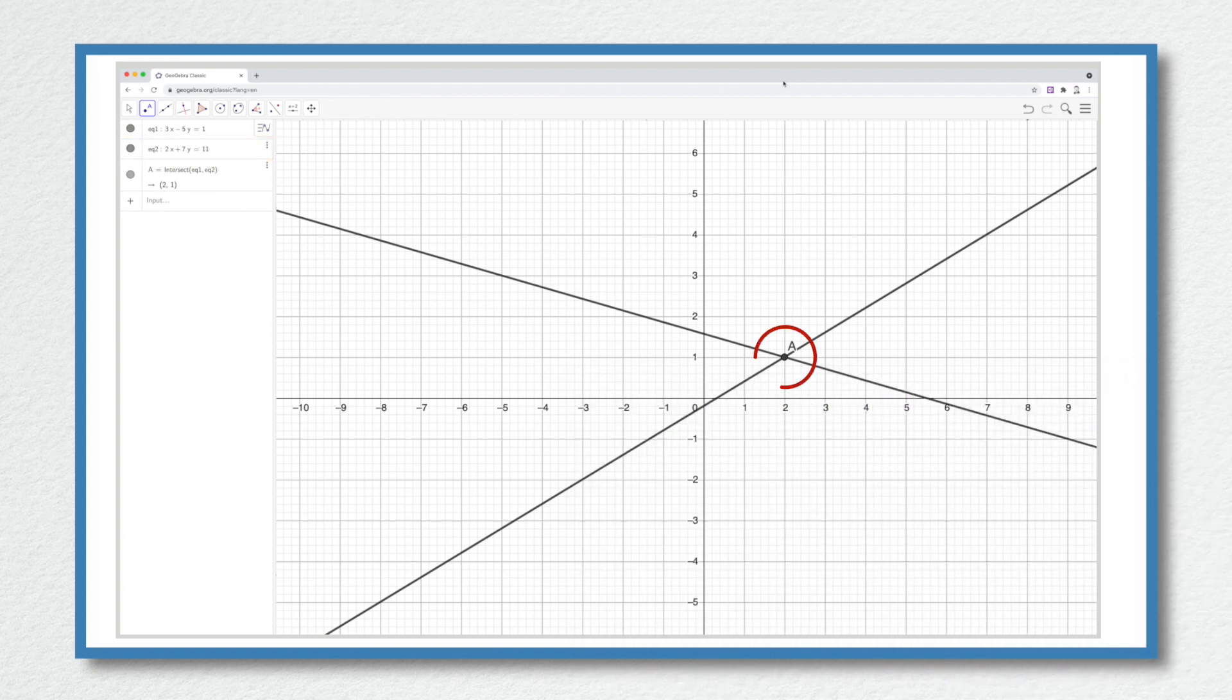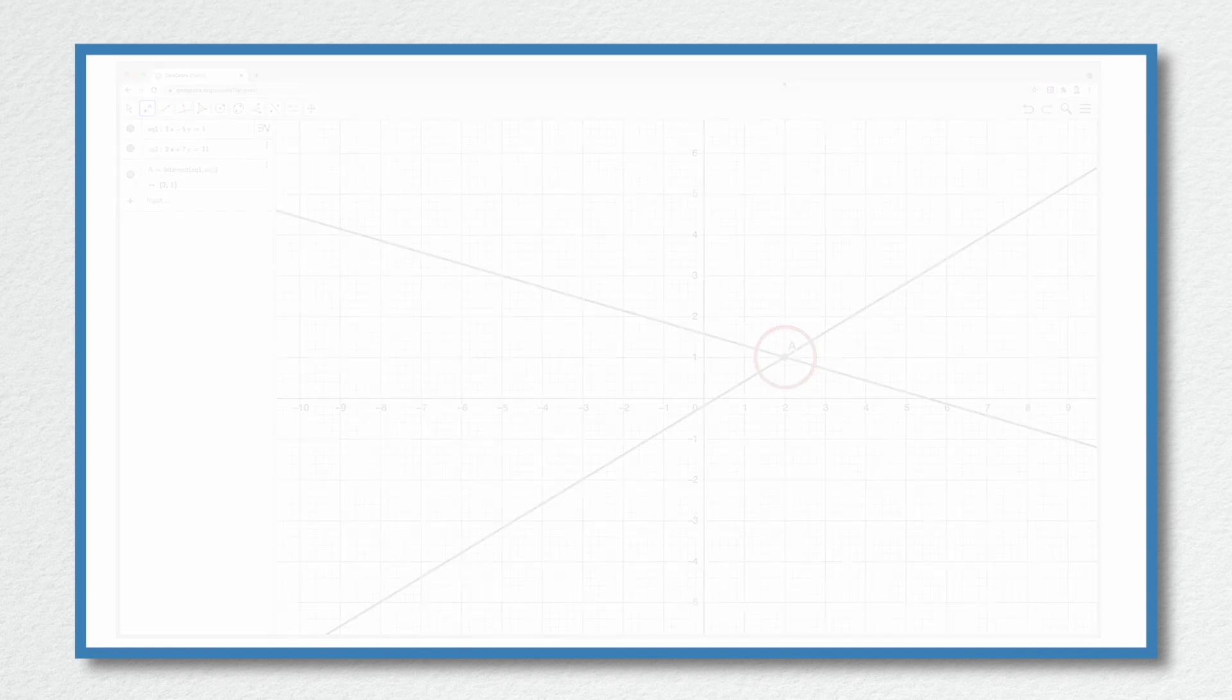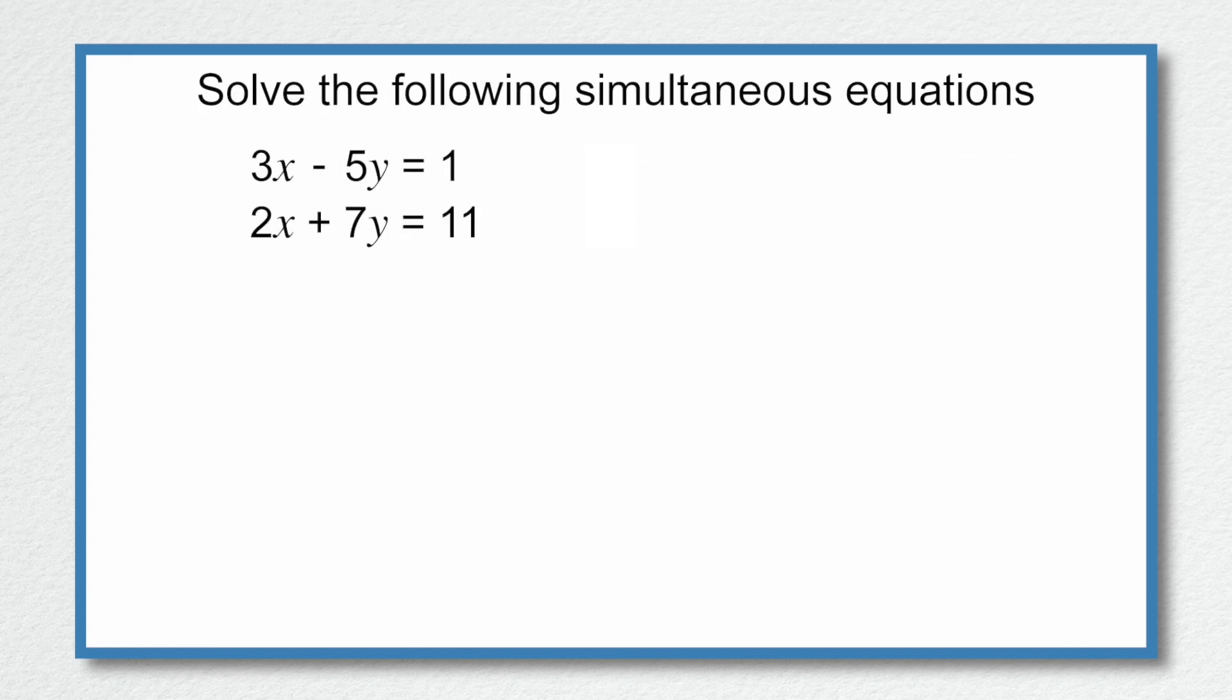By finding the intersection we have found the solution to this pair of equations. But let's look at finding the solution to these equations this time using a non-graphical method. In maths you will be expected to solve simultaneous equations and what that means is a set of equations for which there is a solution that satisfies those equations. So here are our two simultaneous equations and we are going to use an algebraic approach to finding the solution.